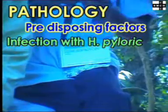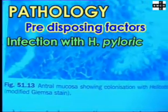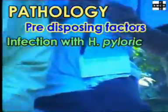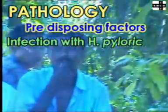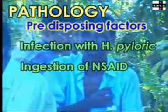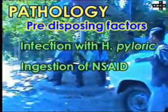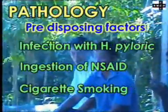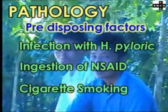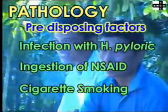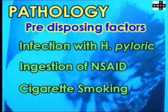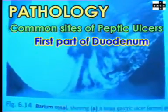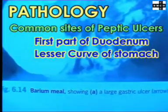It is now widely accepted that infection with H. pylori is the most important factor in the development of peptic ulceration. Ingestion of non-steroidal anti-inflammatory drugs is another very important factor. Cigarette smoking predisposes to peptic ulceration and increases the relapse rate. The common sites are the first part of the duodenum and the lesser curve of the stomach.